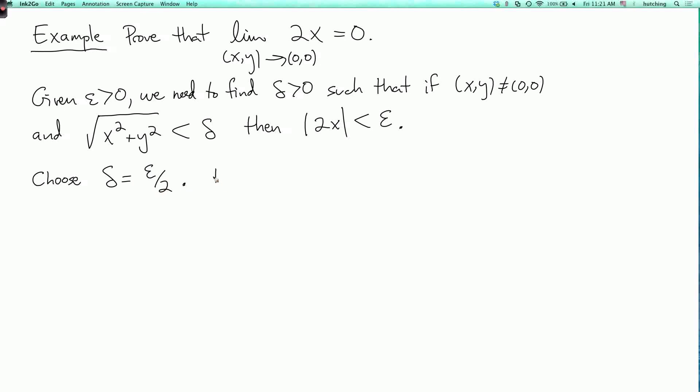So this works because if √(x² + y²) < ε/2, well, then |x|, well, that's √(x²), right? And that's ≤ √(x² + y²). And that's < ε/2.